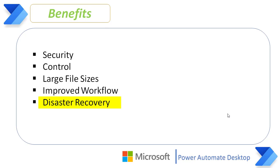Last but not least is disaster recovery. When disaster strikes — like an interruption to your internet connection, loss of power, or even a natural disaster — you don't have to worry about losing work. Instead, your data is regularly and automatically backed up to another location using FTP, and if you need to restore your data, you can do so by coordinating with your FTP vendor.